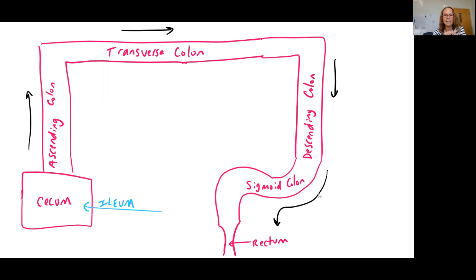From the cecum, material will move into the ascending colon, the transverse colon, the descending colon, and then through a little twist that's somewhat S-shaped. And so it's called the sigmoid colon, where sigmoid means S-shaped. And then the final portion is the rectum, which then will lead to the anus.